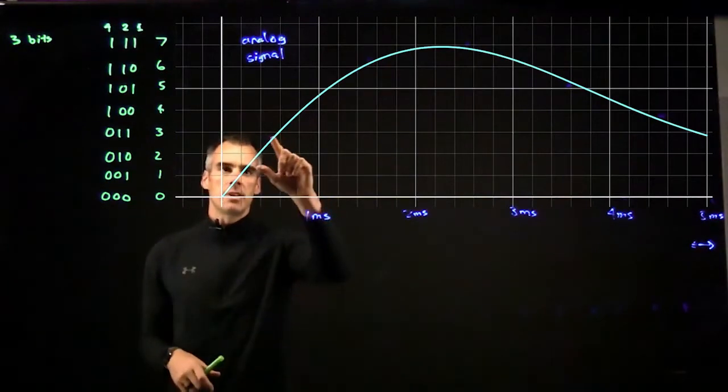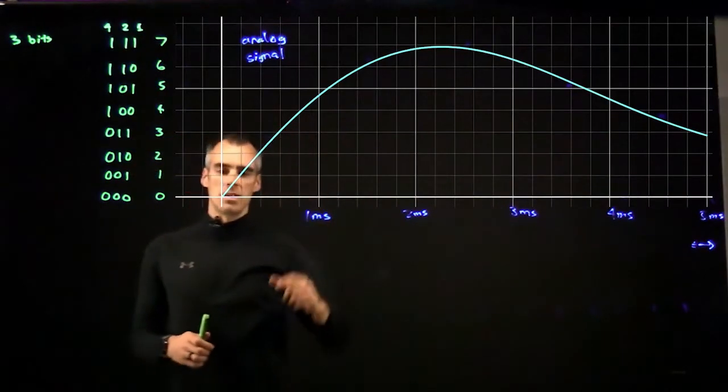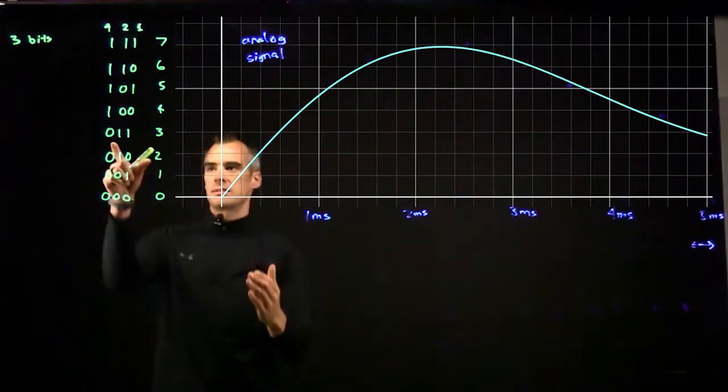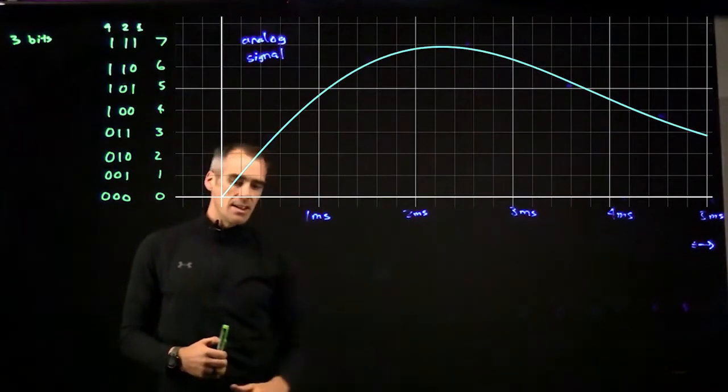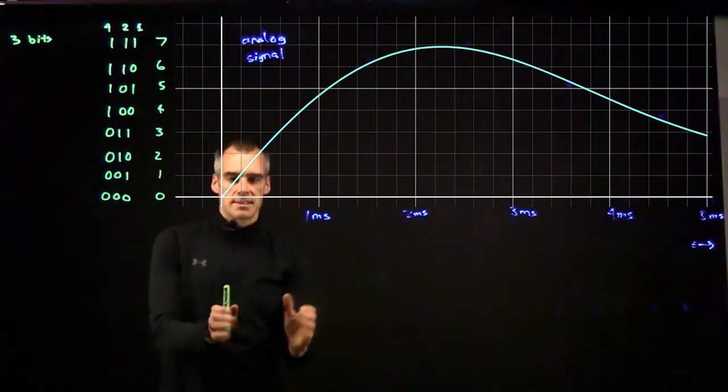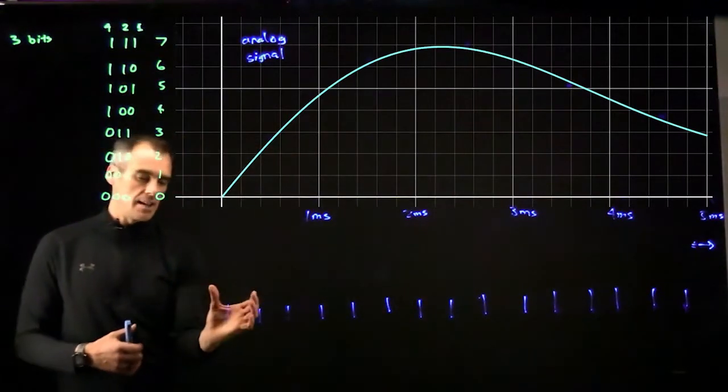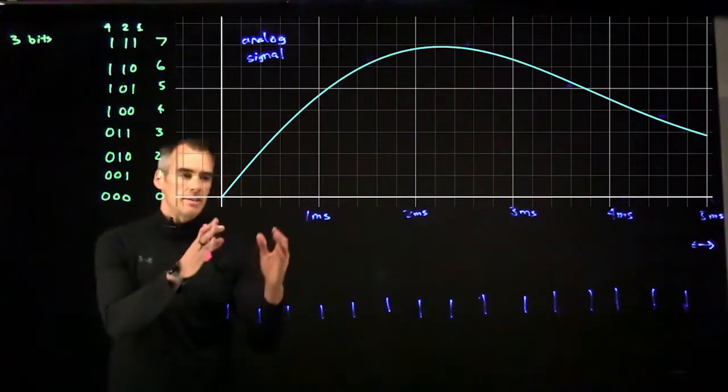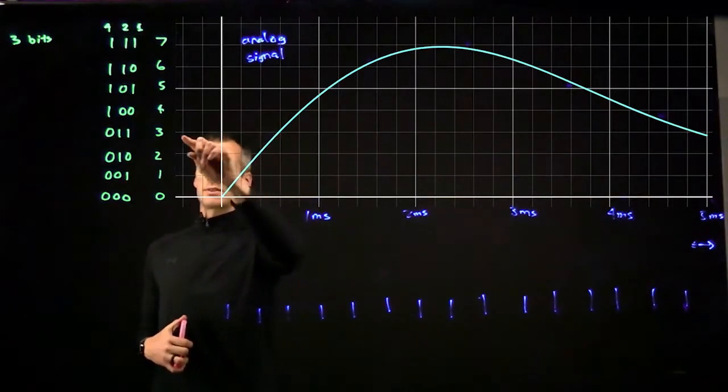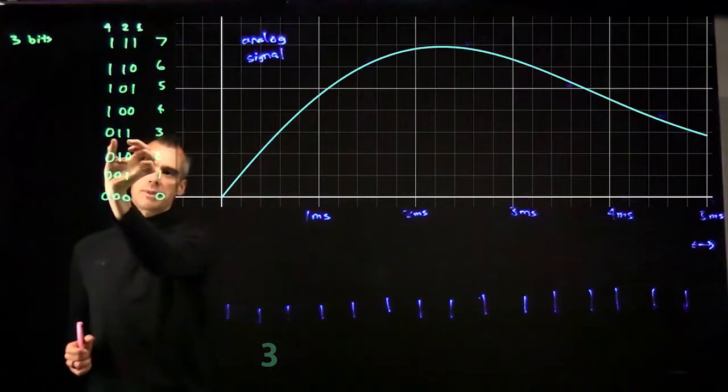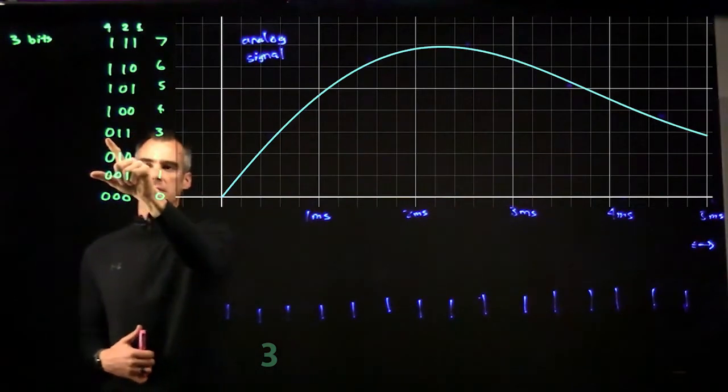And now let's go ahead and just try to analyze this at each block. So we'll look at this first one millisecond here, and we'll look at kind of where that signal is at this time. You'll notice it's closest to this three line up here, which is our zero one one. So what that's going to do is correspond to this zero one one signal that I'm going to want to send over that time frame.